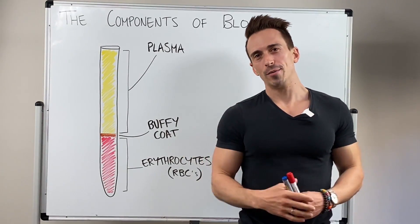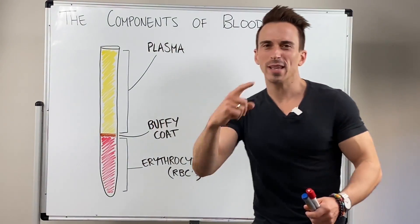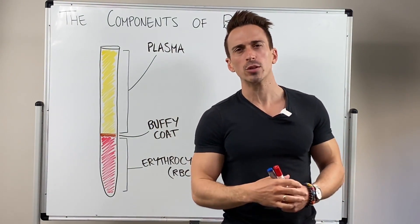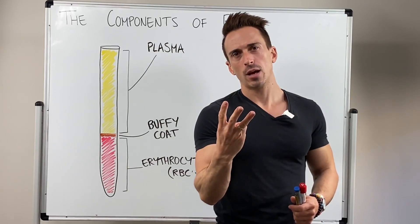So what is in your blood? Well if I want to take your blood, put it into a tube and then spin that tube really quickly into a centrifuge, three layers are going to present themselves.